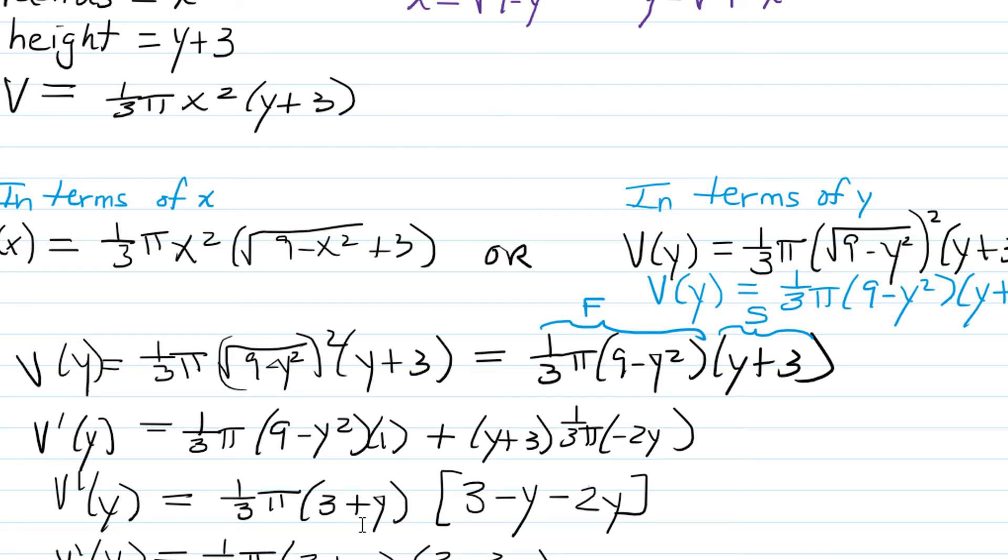Now that we have a formula for the derivative, I'm going to simplify it. You could distribute and combine like terms, but I noticed that 9-y² has a factor of (3+y) and a factor of (3-y), and we have a factor of (y+3) in the other term. So I factored out (3+y) and (1/3) and π, and what was left behind was (3-y) in the first term and -2y in the second term.